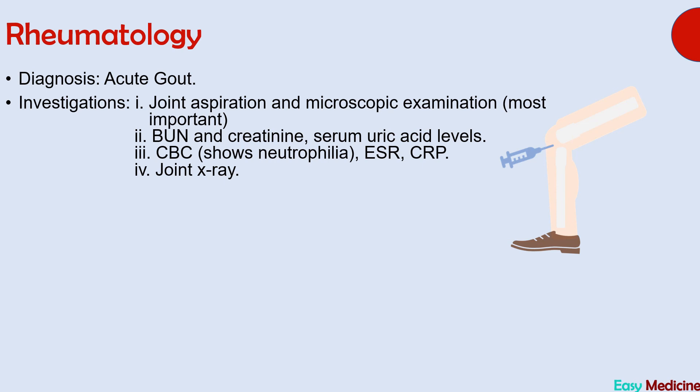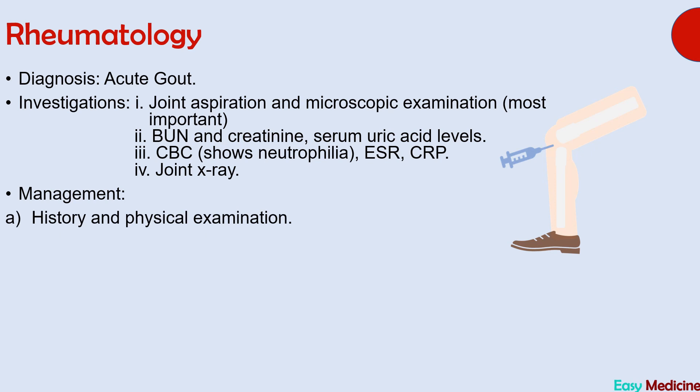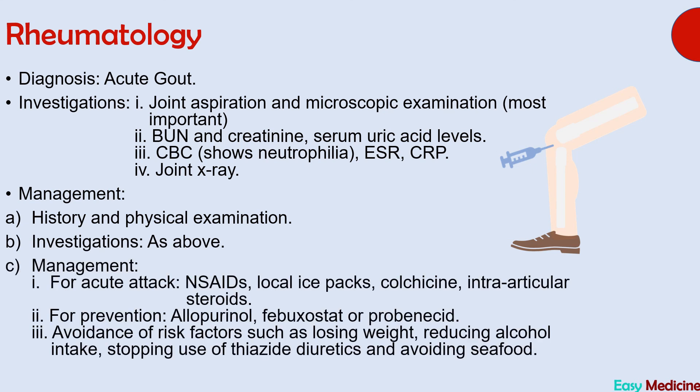Management of acute gout begins with history, physical examination, and the investigations listed above. Treatment of an acute attack includes ice packs, colchicine, and intraarticular steroids. For prevention, allopurinol, febuxostat, or probenecid is used. Risk factor avoidance is also required: losing weight, reducing alcohol intake, stopping thiazide diuretics, and avoiding seafoods.